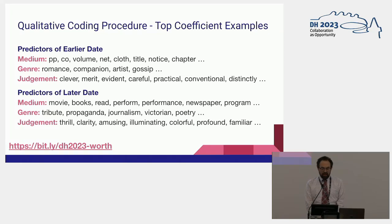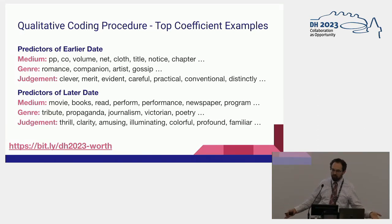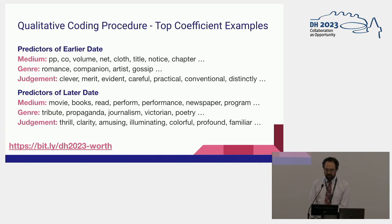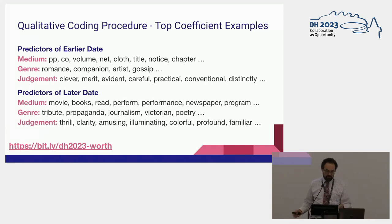I looked at the overlapping coefficients by setting a cutoff of 2,000 or 4,000 — the top-ranked words on both lists. I found words that suggest categories I was interested in. Predictors of an earlier date included medium-specific terms like PP, cloth, and volume — words about books as objects. Genre terms included romance, companion, artist, gossip. Judgment terms included words like clever, merit, and evident.